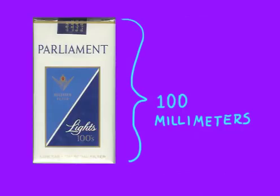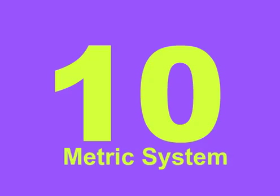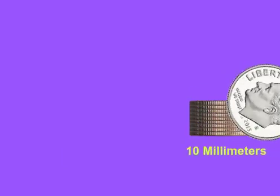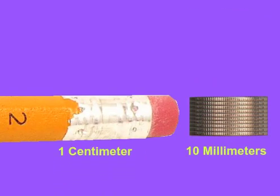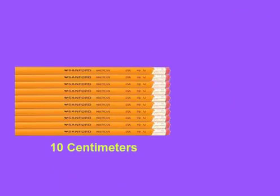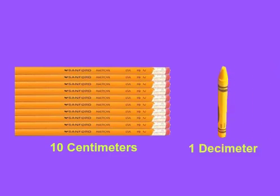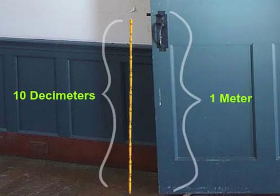Some cigarettes are called 100s because they are 100 millimeters long. You can see how everything is measured by 10 in the metric system. 10 millimeters equals 1 centimeter. 10 centimeters equals 1 decimeter. 10 decimeters equals 1 meter.